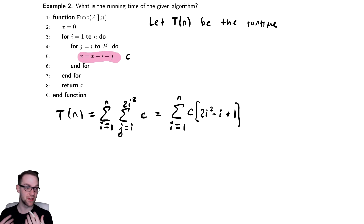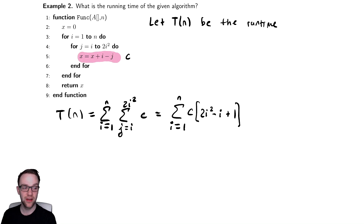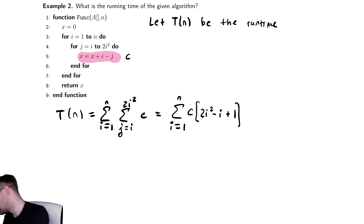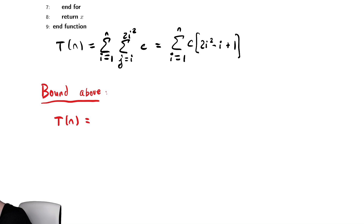In the previous problem, I would try to use a closed form expression. We could still get a closed form expression here; however, this is starting to get a little bit messy. In general, I only try to get a closed form expression when it looks very similar to one of our formulas that we've seen in the past. Here it looks pretty similar — I can distribute the summation and try to use them — however, I'm just going to go right to bounding it. So let's bound this above. To bound this above, we have T(n) equal to the sum from i equals one to n of c times 2i² minus i plus one. We need to make that bigger.